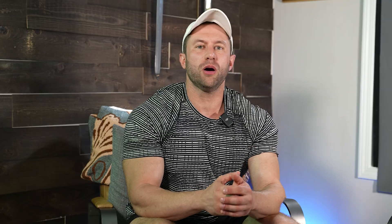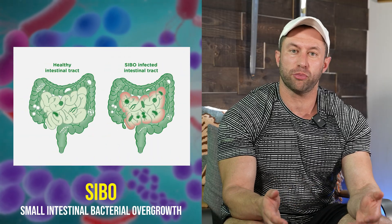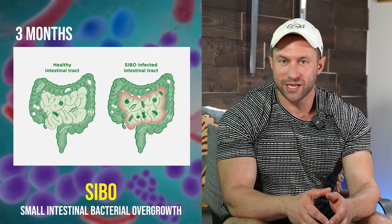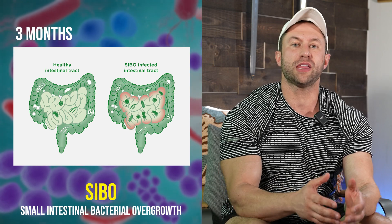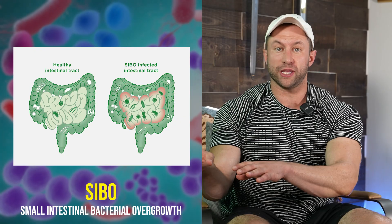With SIBO, traditionally speaking with a functional, holistic approach, it takes approximately three months to kill off enough of that bacteria strain to get it down. Then you repopulate the gut on the tail end of it. The only issue is if strains are very high, it may take more than one kill phase to get rid of it — and this is typical when people have very high strains of bacteria.